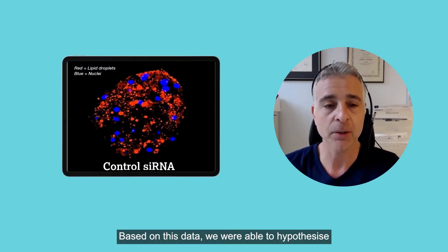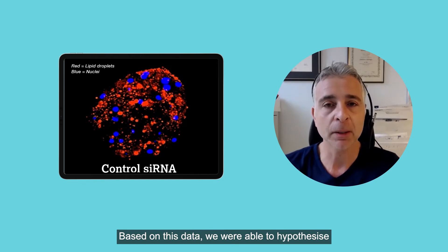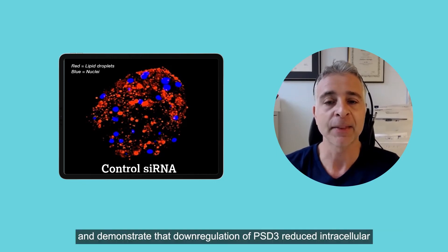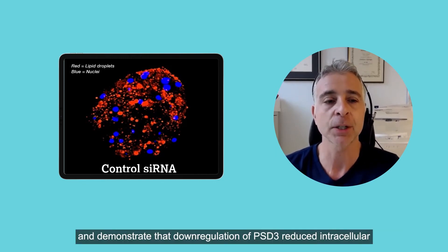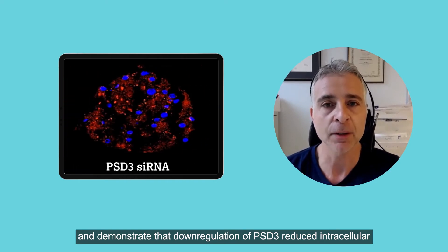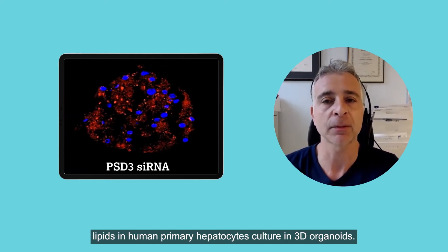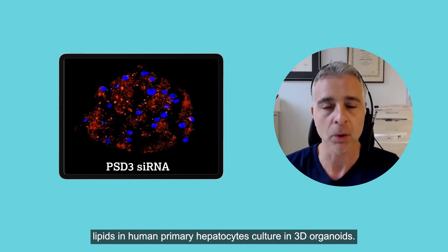Based on this data, we were able to hypothesize and demonstrate that downregulation of PSD3 reduced intracellular lipids in human primary hepatocytes cultured in 3D organoids.